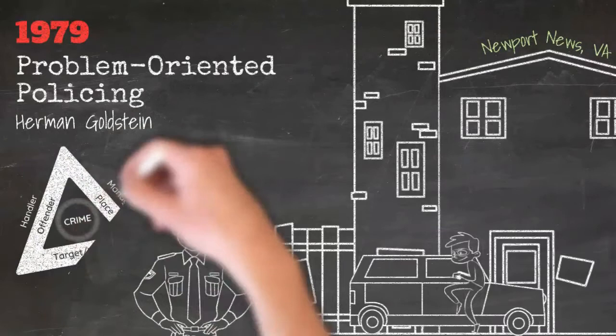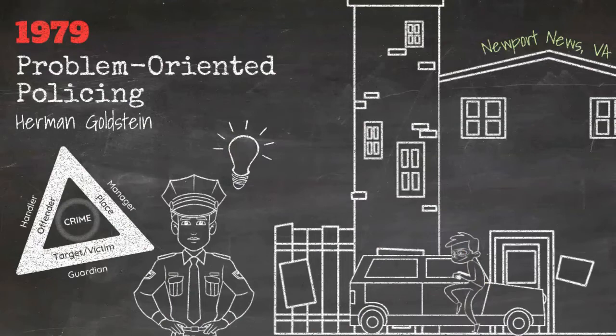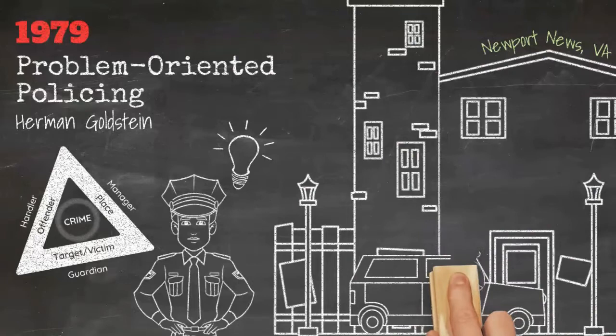Agencies learned they could use the routine activity-based problem analysis triangle and the SARA model to scan the environment for problems, analyze their causes, respond effectively, and assess outcomes with the aim of sharing what they learned.